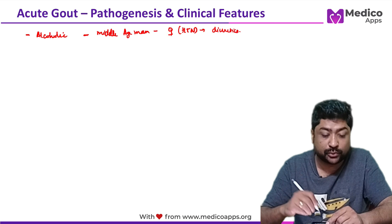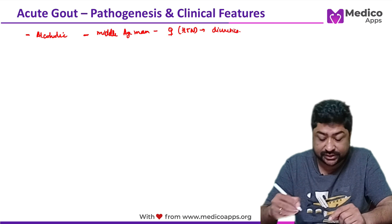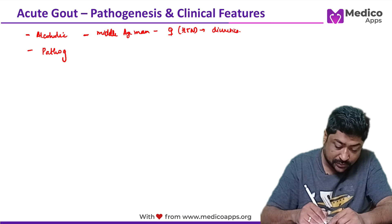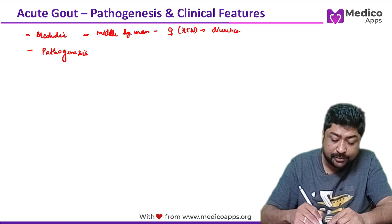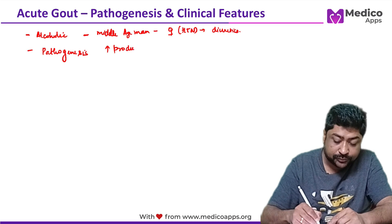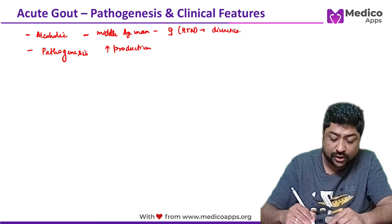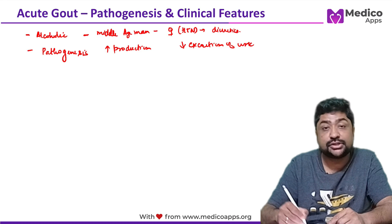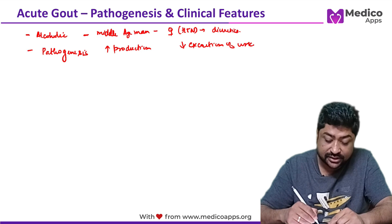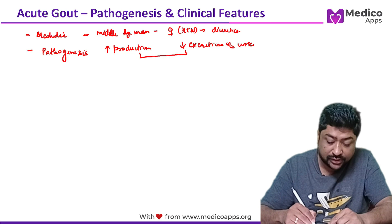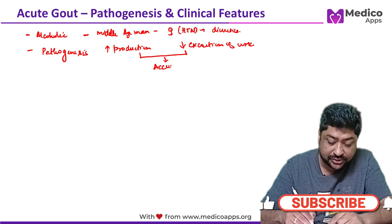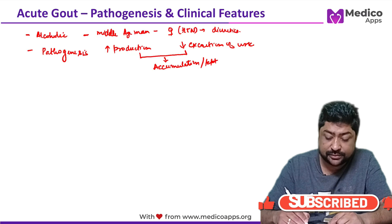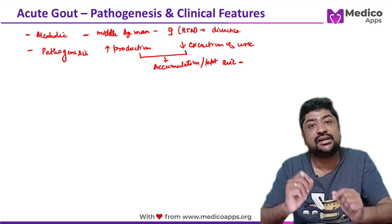In these groups of patients, the pathogenesis involves either increased production of uric acid or decreased excretion of uric acid — meaning production is normal but excretion is decreased. Both lead to accumulation and precipitation of uric acid, forming needle-shaped crystals. Direct damage by these needle-shaped crystals is implicated in the pathogenesis of acute gout.